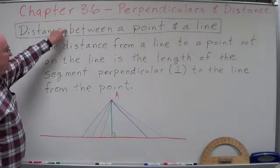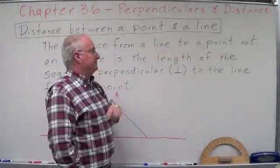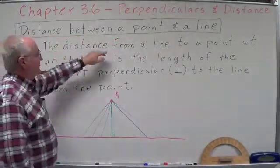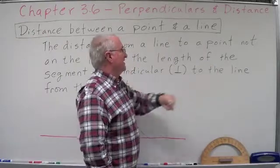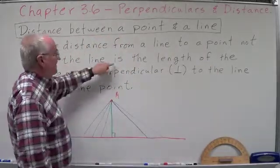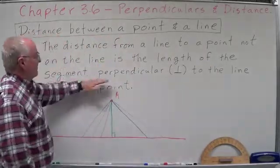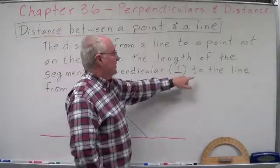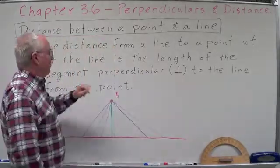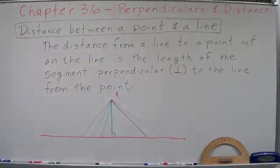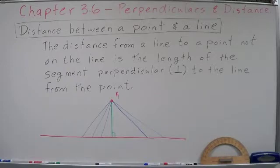Perpendiculars and distance. Distance between a point and a line. The distance from a line to a point not on the line is the length of the segment perpendicular to the line from the point. I've drawn an example down below.